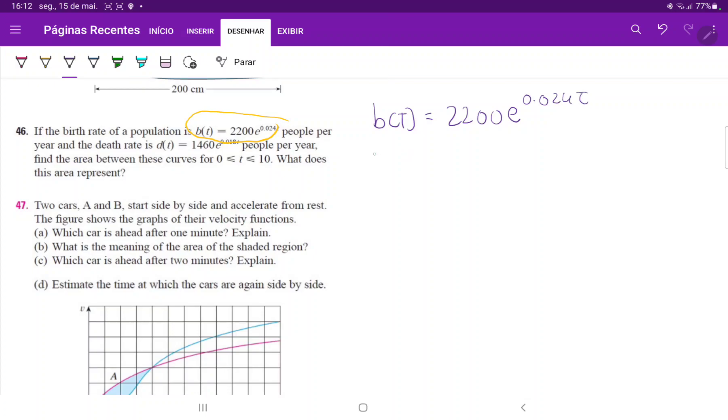and then the death rate is D(t). The death rate is equal to 1460e to the 0.018t.